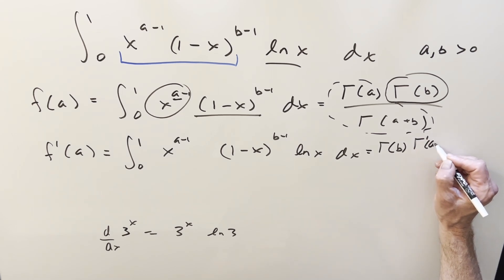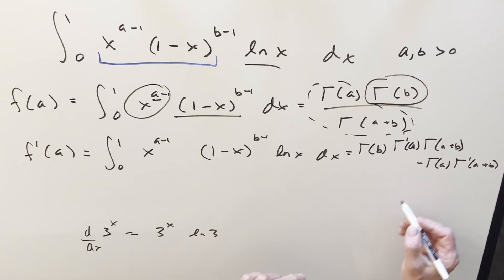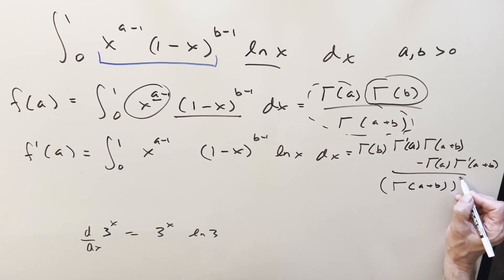So in this part, we're going to get the derivative of gamma a, gamma a plus b. Didn't play my space very well. I'm going to make it work, though. So then we got gamma a, derivative, gamma a plus b all over the denominator squared. So it's going to be gamma a plus b all squared.